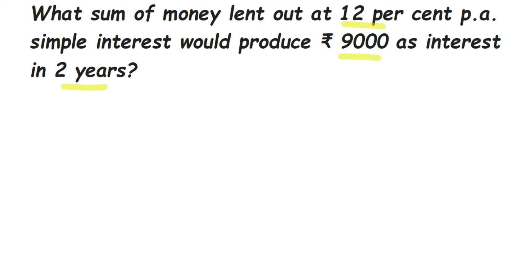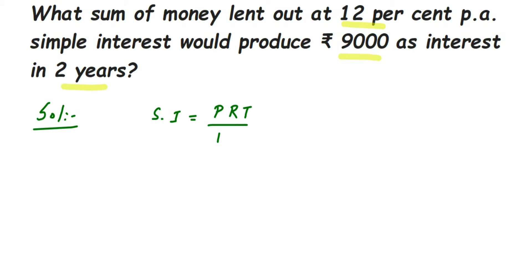You might have learned a formula to find out the interest. So let me write down the formula first. Simple interest, that is SI, is equal to P into R into T divided by 100.